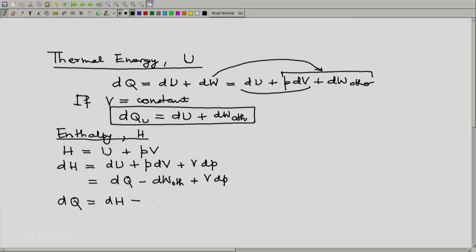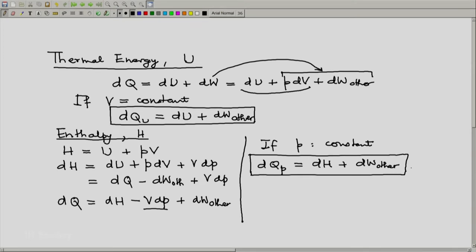First we write dQ equals dH minus VdP plus dW other. And now consider a situation where p is constant. So this term drops out and then you will get dQ at constant pressure equals dH plus dW other. A relation similar to the relation which we got earlier. This is the relation at constant volume. This is the relation at constant pressure.